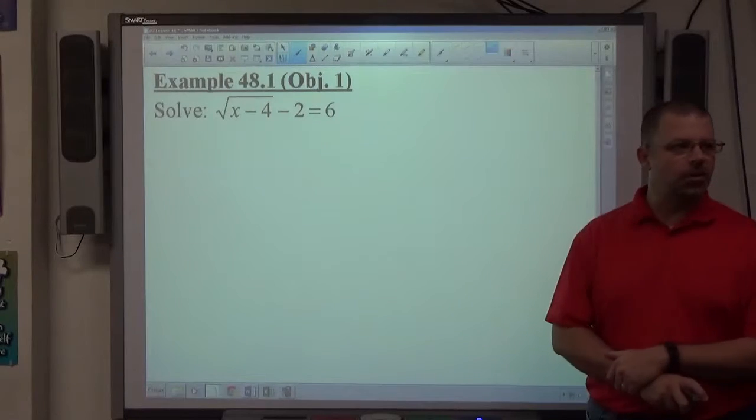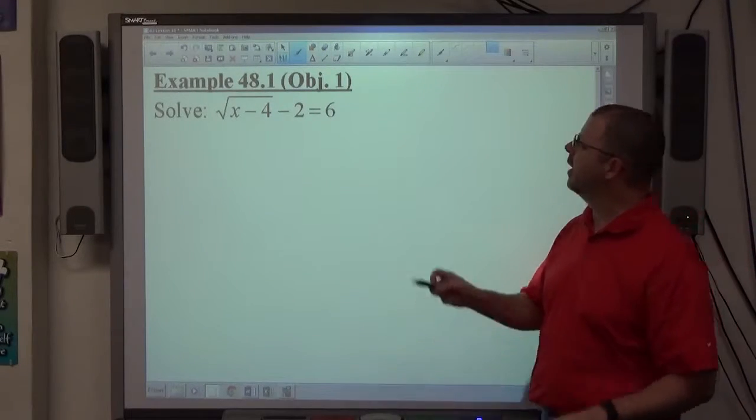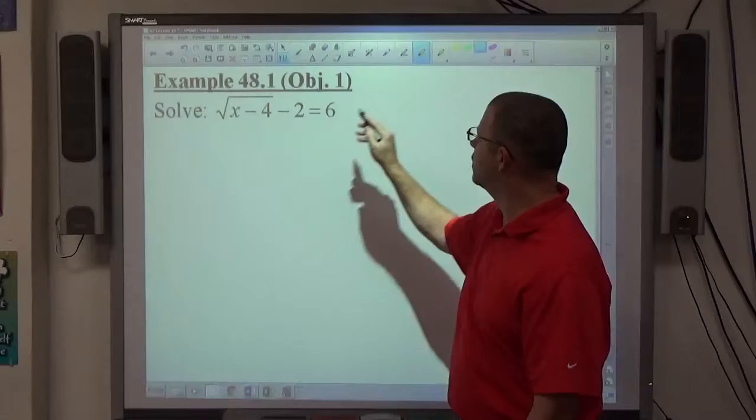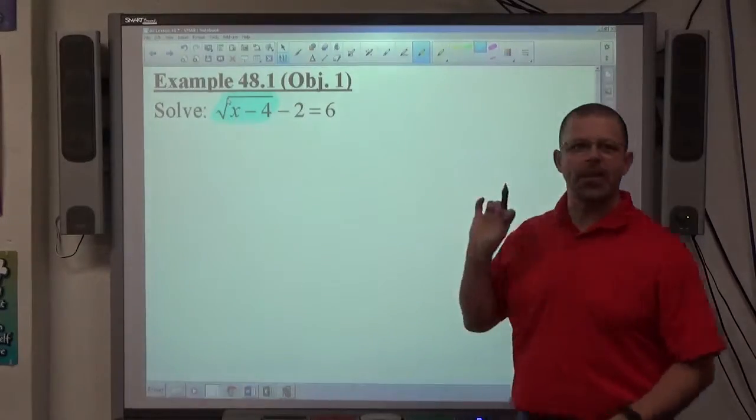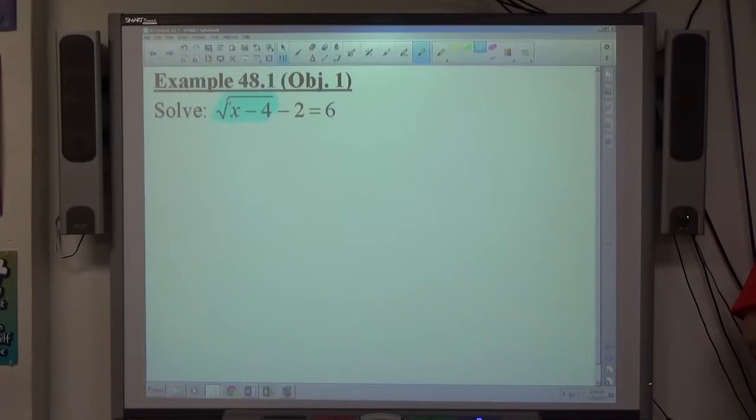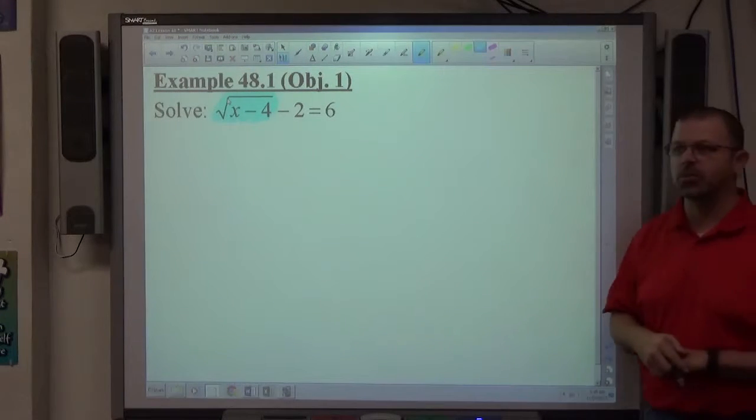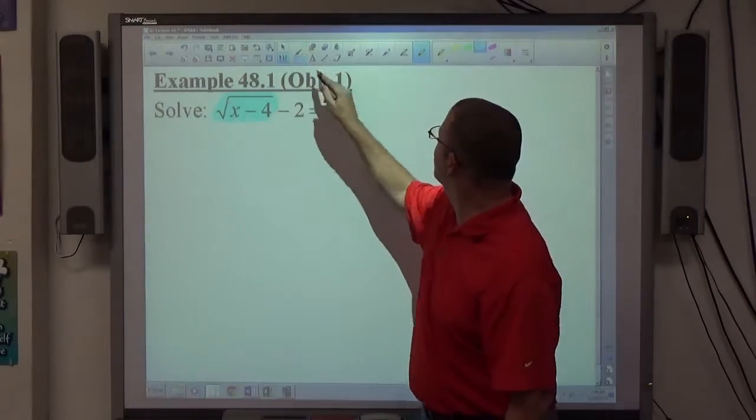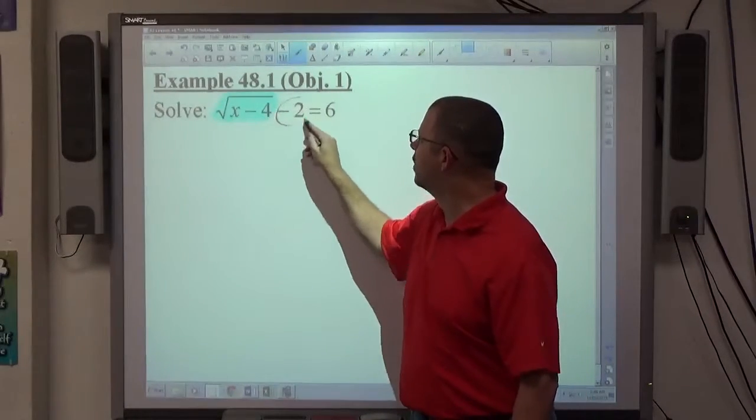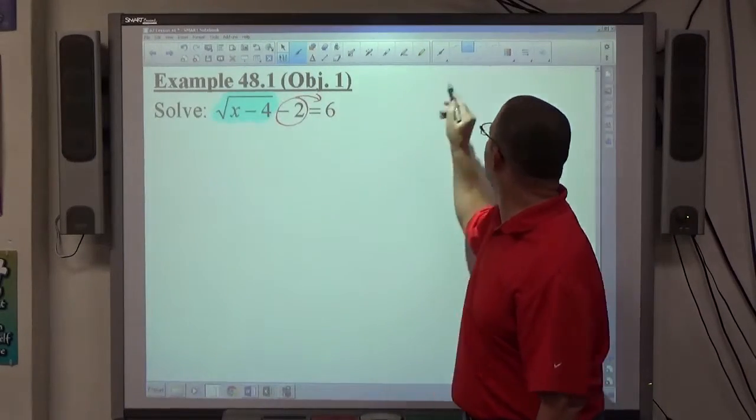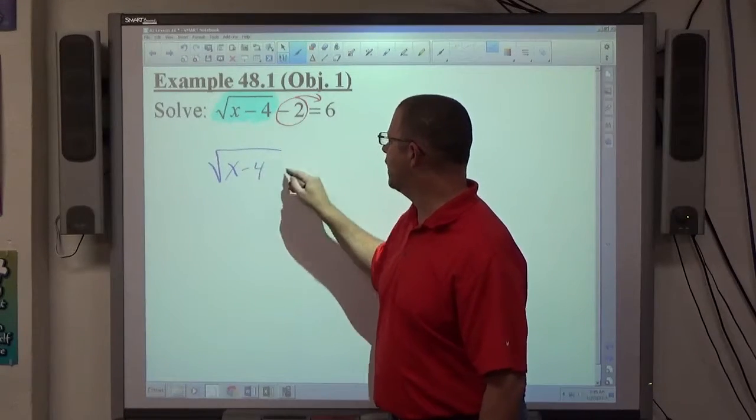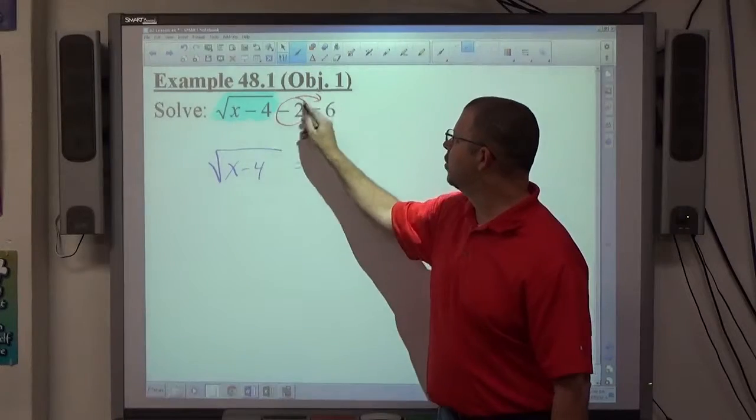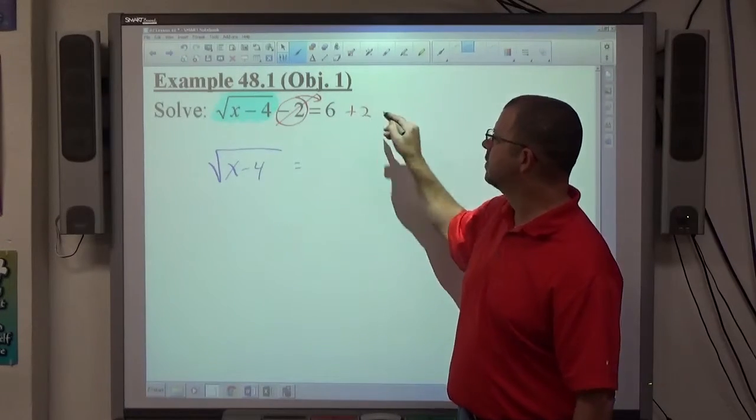To solve a square root equation, our first priority is to isolate the square root. So if you look at the square root expression, square root of x minus 4, I want that isolated, I don't want anything on the same side as it. So currently the minus 2 is on the same side as the square root of x minus 4. So my first step is to take the negative 2 and slide it over to the right hand side. So that gives me the square root of x minus 4 on the left equals, if I move the 2 over it becomes a plus 2, right, so it equals 8.